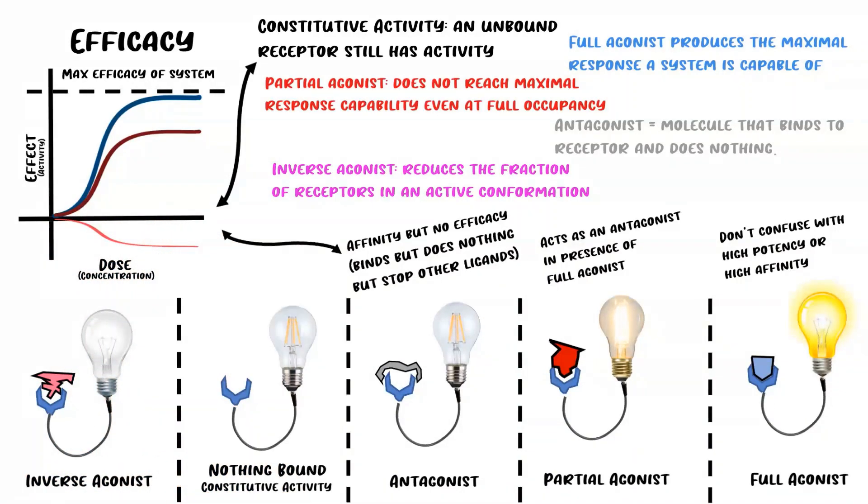Let's look at the dose-effect curve to quickly summarize everything. In blue, we see the full agonist, which produces the maximum response the system is capable of. Next, we see the partial agonist in maroon, and even as we increase the dose, it's not capable of reaching the full effect even at full occupancy.